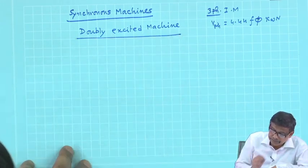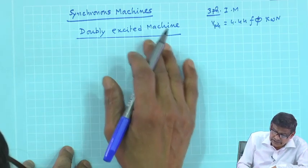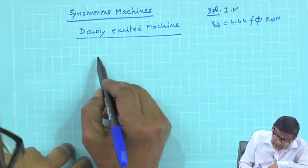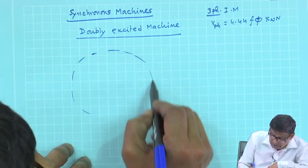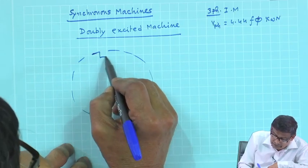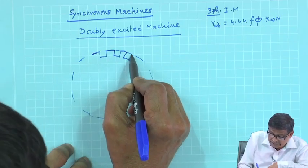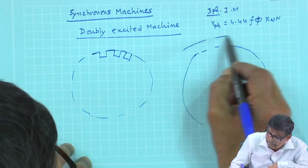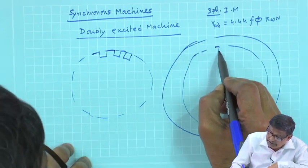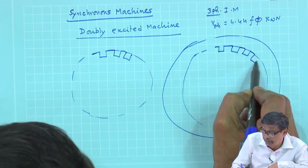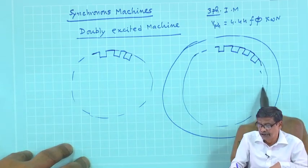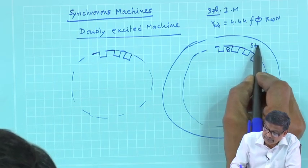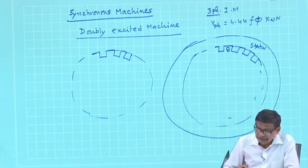In a doubly excited machine, on the stator you have a three-phase distributed winding. The stator has slots and teeth, and a double-layer distributed three-phase winding is placed on the stator.